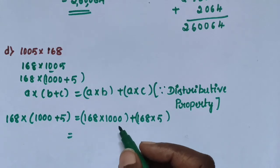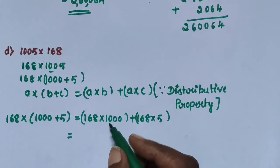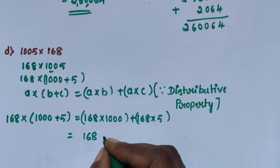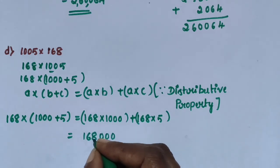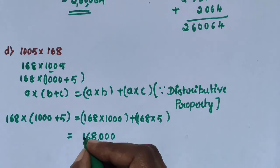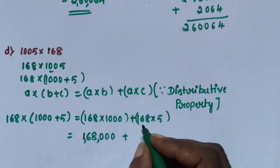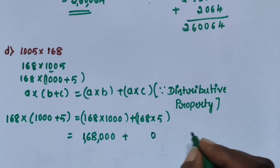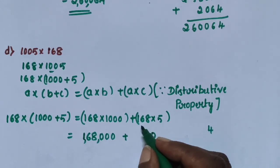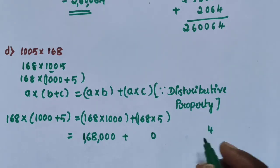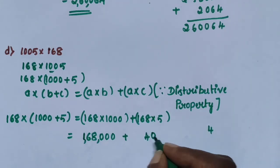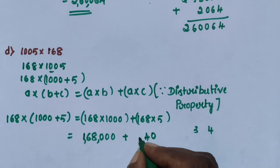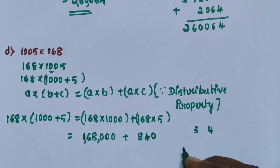Multiply 168 into 1000, giving 1,68,000. Plus, multiply 168 into 5: 5 eights are 40, write 0 carry 4; 5 sixes are 30, plus 4 is 34, write 4 carry 3; 5 ones are 5, plus 3 is 8. So 168 into 5 equals 840. Add these two numbers.